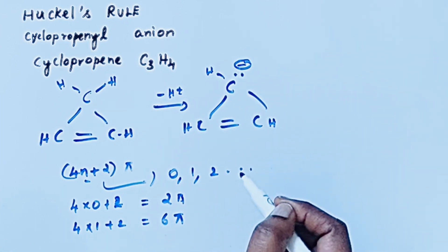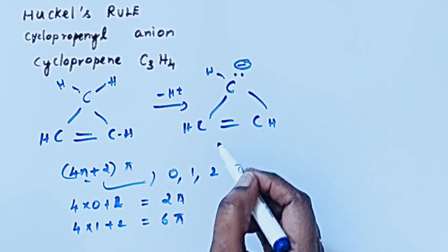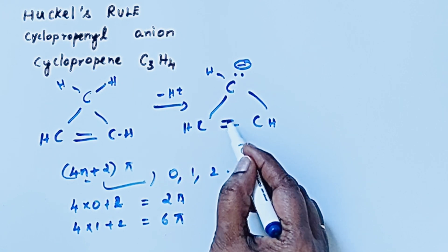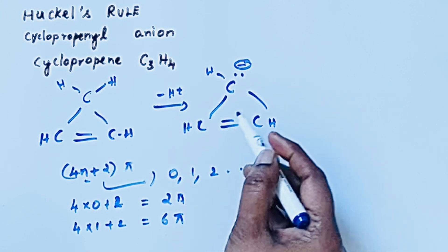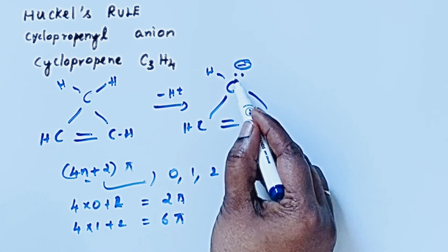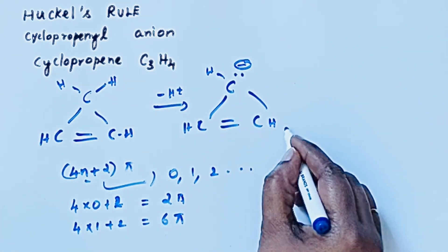Cyclopropenyl anion. So for that how many pi electrons are present? So here we have that pi electron. So there are 2 pi electrons, then here also we have 2 pi electrons. So total 4 pi electrons are present.